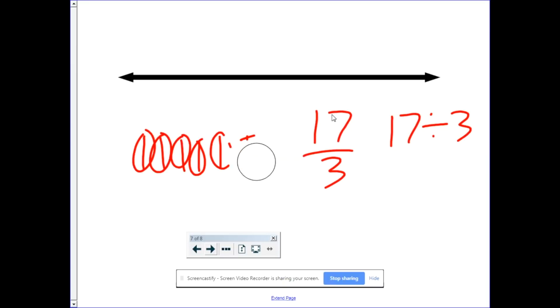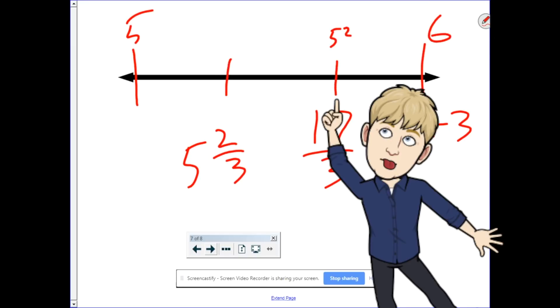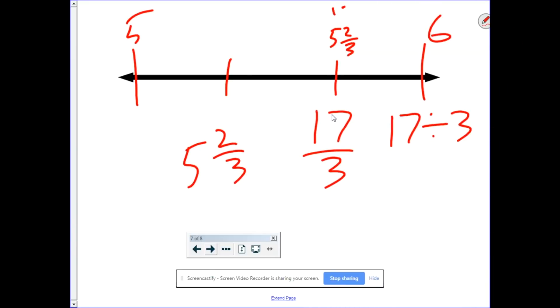Three goes into 17 five times, with two left over. So, we have five and two-thirds. Well, here's my five, here's my six. Five and two-thirds is right about here. Five and two-thirds. So, 17-thirds is between five and six.